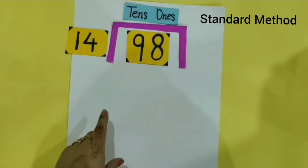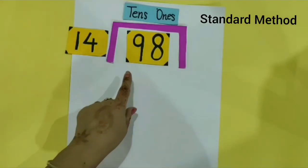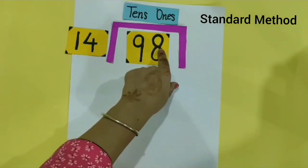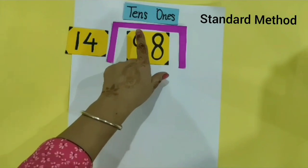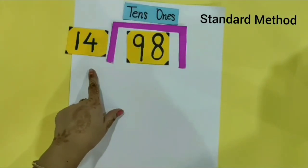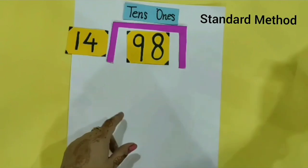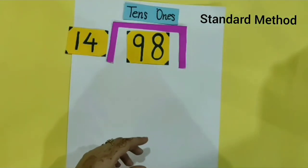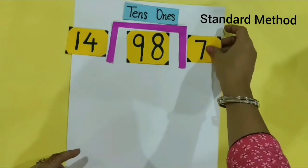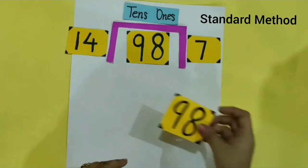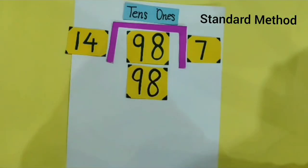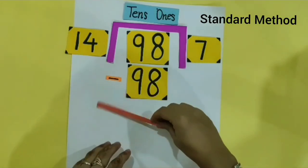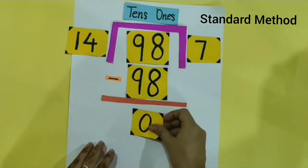Now we use the standard method of division. 98 divided by 14. 8 is at the 1's place and 9 is at the 10's place. What times 14 equals 98? 14 sevens are 98. We subtract 98 from 98, which is equal to 0.